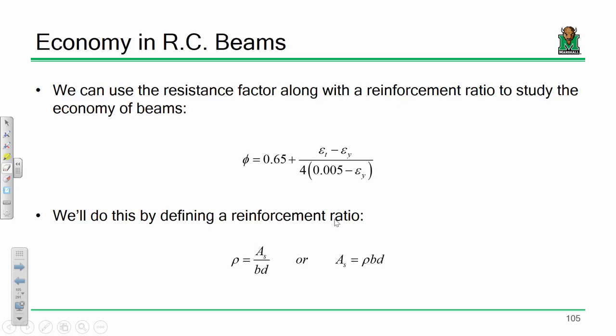In order to discuss economy, I'm going to introduce a new concept: the reinforcement ratio. In simple terms, a reinforcement ratio is nothing more than the area of steel divided by the area of concrete — in this case B times D, the effective area of concrete. If my reinforcement ratio is 0.02, then 2% of that beam is steel. It's just a ratio of how much steel you have versus how much concrete. If we've got the dimensions of a beam and we know our reinforcement ratio, it tells us how much reinforcement we need.